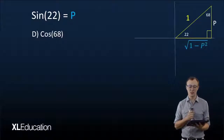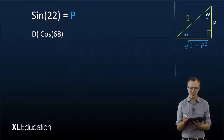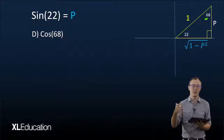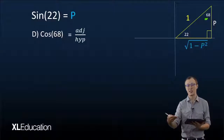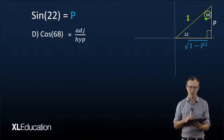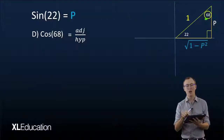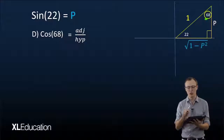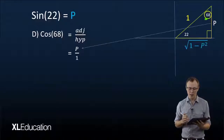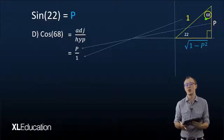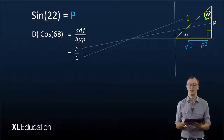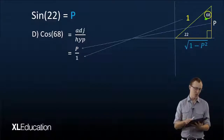For cos(68°), we have a 68° angle in our triangle, so we can just read the solution off the triangle. Cos is the adjacent over the hypotenuse. Our angle is now the 68° angle, not the 22° angle, so the adjacent side is now P and the hypotenuse is still 1. Therefore cos(68°) is simply equal to P over 1.